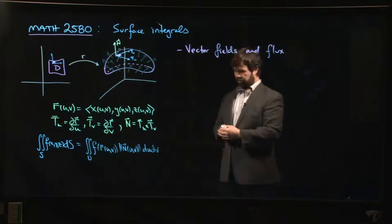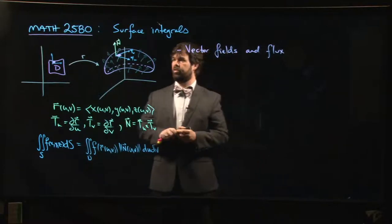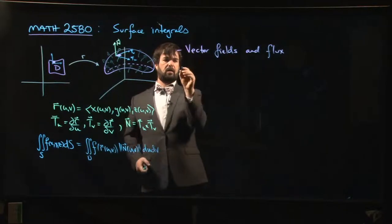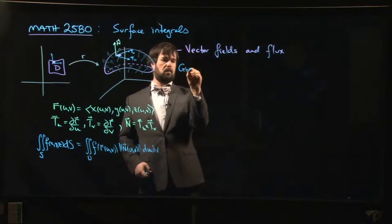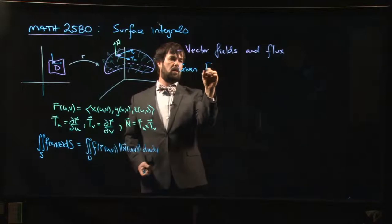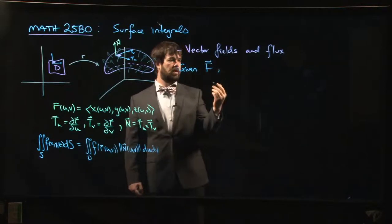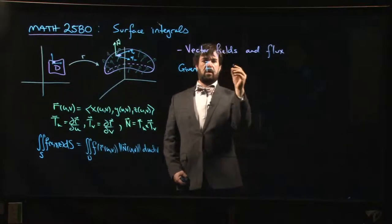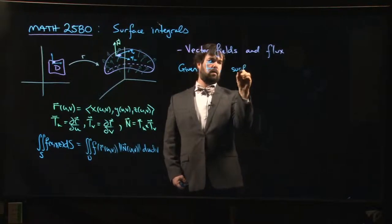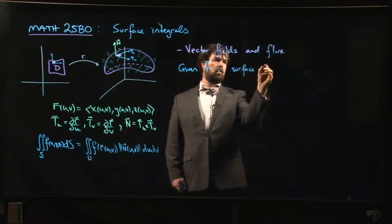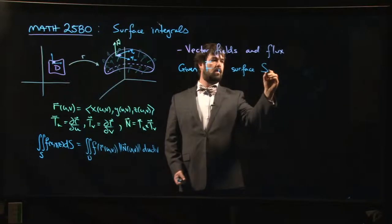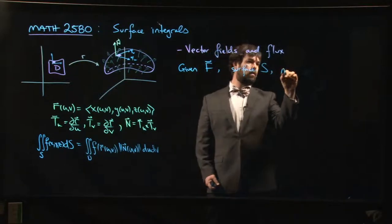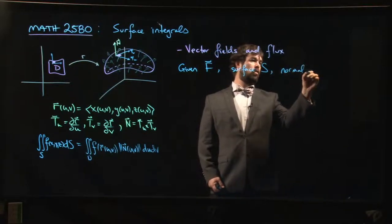Given a vector field F, we can compute for our surface S the normal component. The normal component would be F dot n, where n is your unit normal vector.